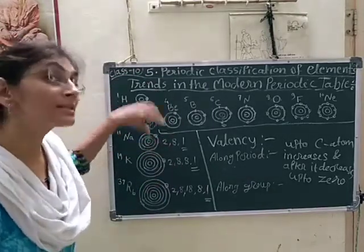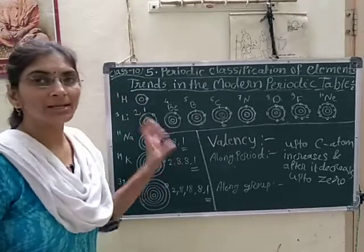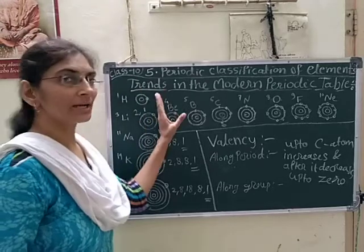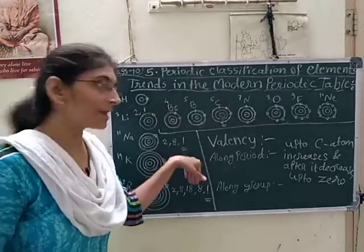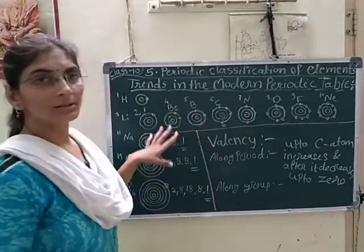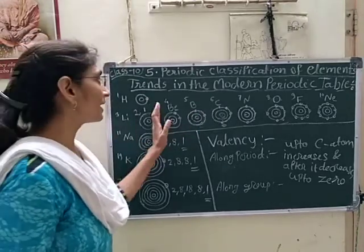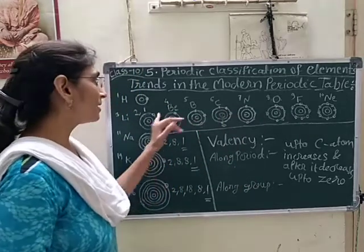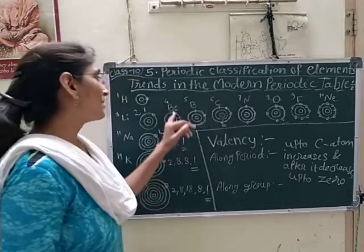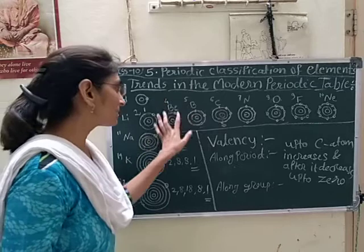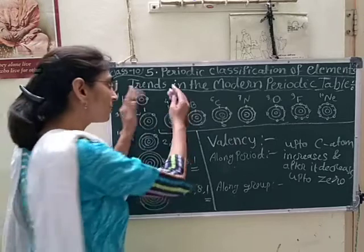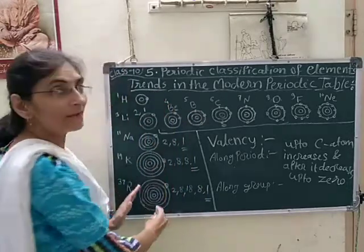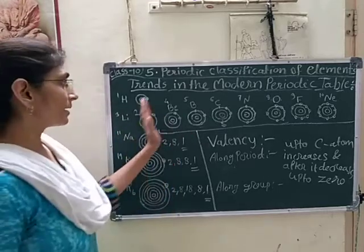Along the group, the valence remains same, as like the valence electron. For first group one valence, for second group two valence, for third group three valence, for fourth group four valence. From group 13 onward it shows the same valence along the group. For carbon also four valence will be there. For the nitrogen group, three valence will be there. For the oxygen group, two valence will be there. For halogens, one valence will be along the group. And for neon, argon, krypton, xenon and helium also, zero valence along the group.